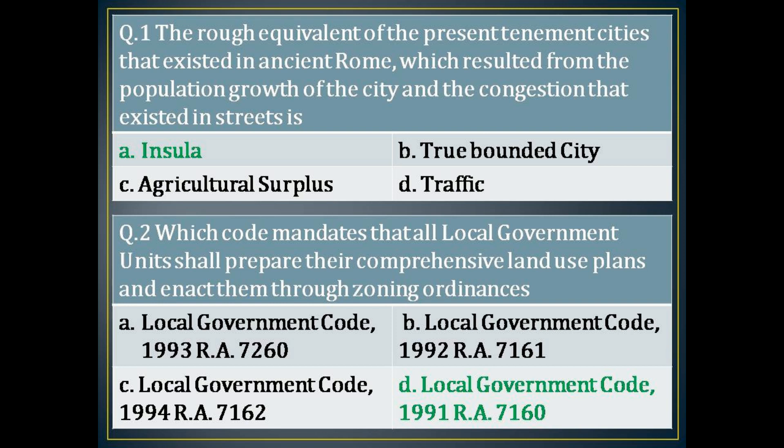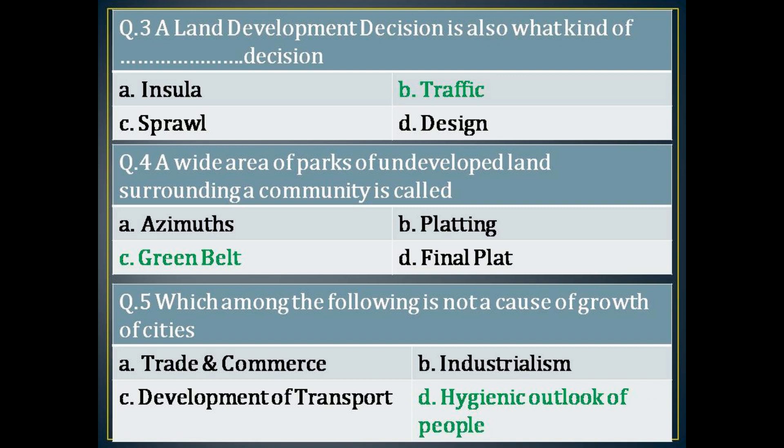The first question is: the rough equivalent of the present tenement cities that existed in ancient Rome, which resulted from the population growth of the city and the congestion that existed in streets, is? The correct answer is: Insular. The second question is: which code mandates that all local government units shall prepare their comprehensive land use plans and enact them through zoning ordinances? The correct answer is: Local Government Code 1991, RA 7160.